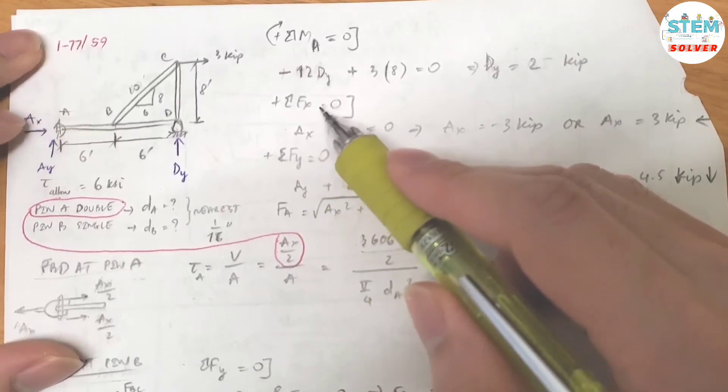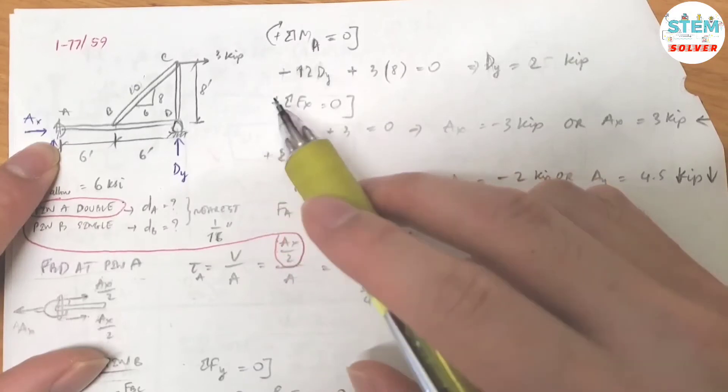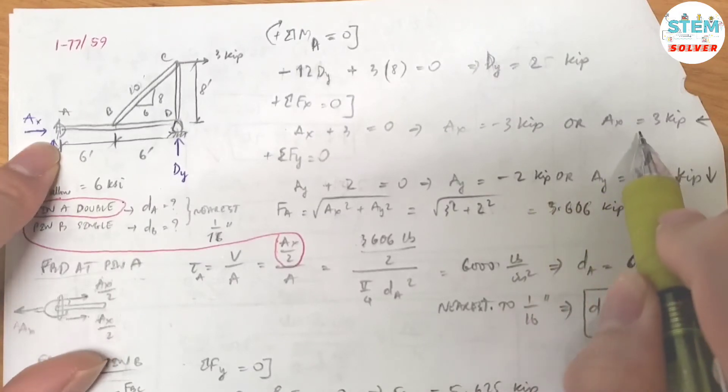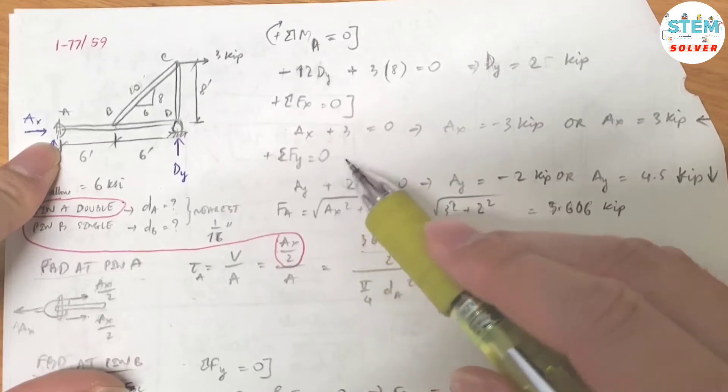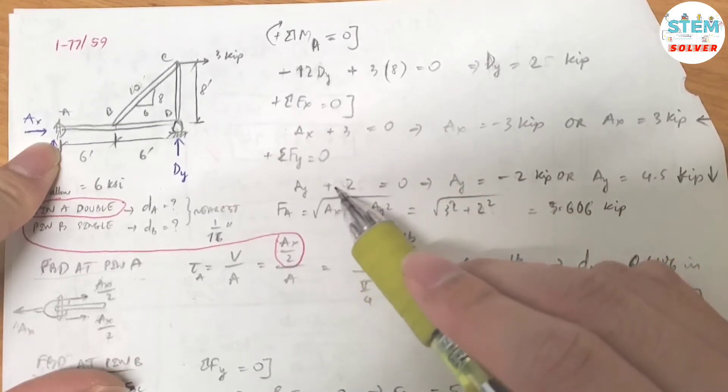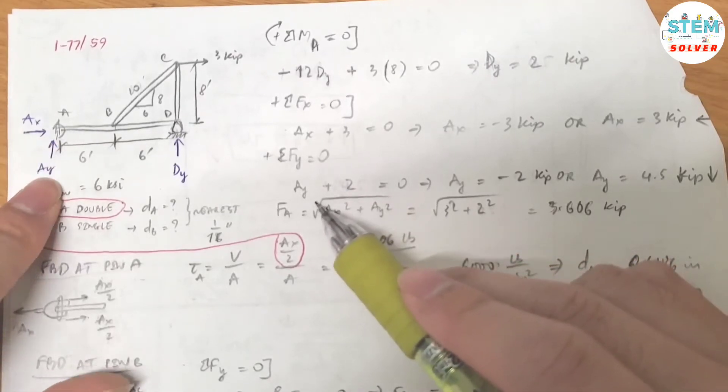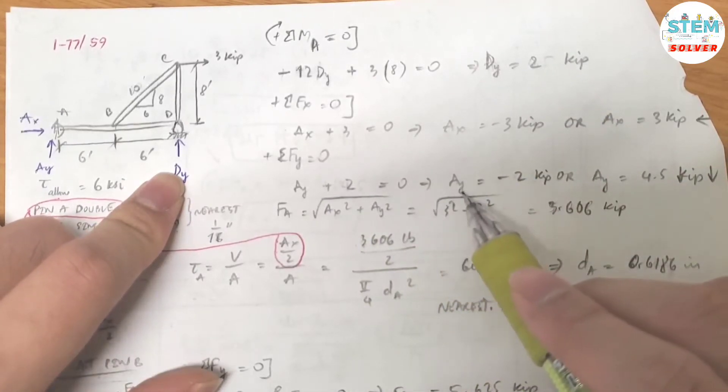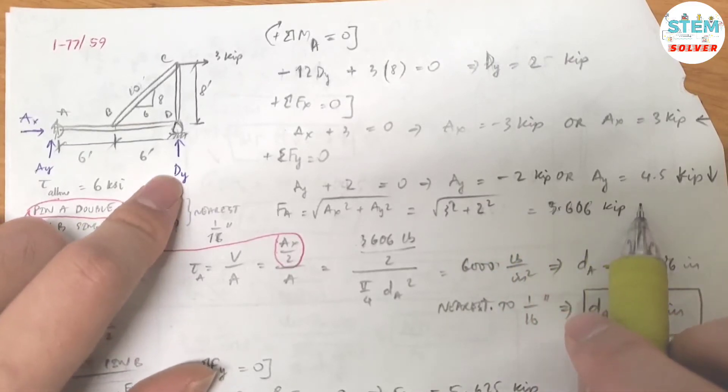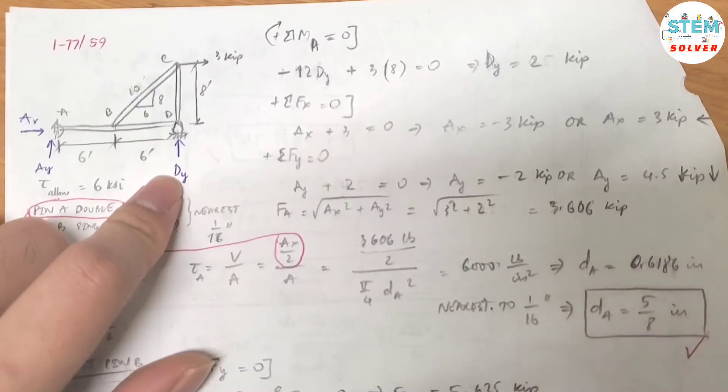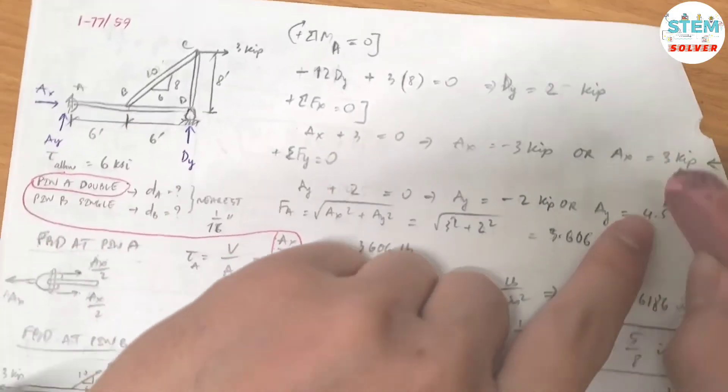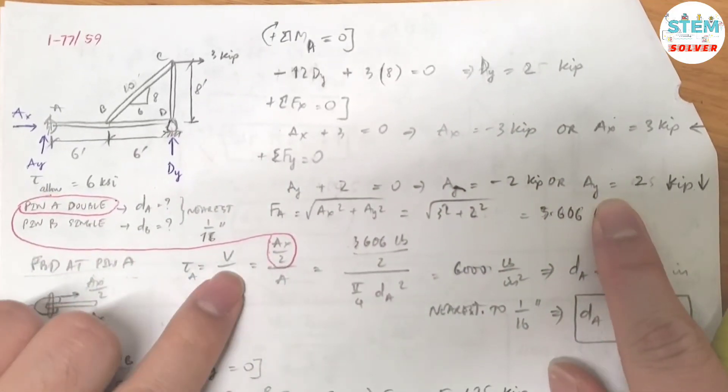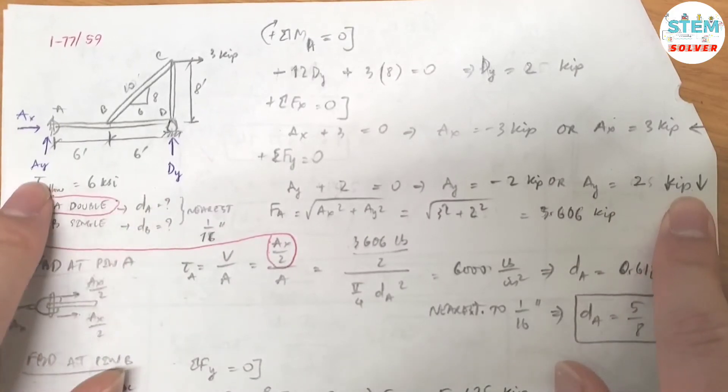Now let's do the summation about the x-axis. I have Ax plus 3 equals 0. Then Ax equals negative 3 kips, or Ax equals positive 3 kips to the left. Now summation of the y-axis is positive Ay plus DY, and DY we found out is 2. So I know that Ay equals negative 2 kips, or Ay equals 2 kips down in positive direction.